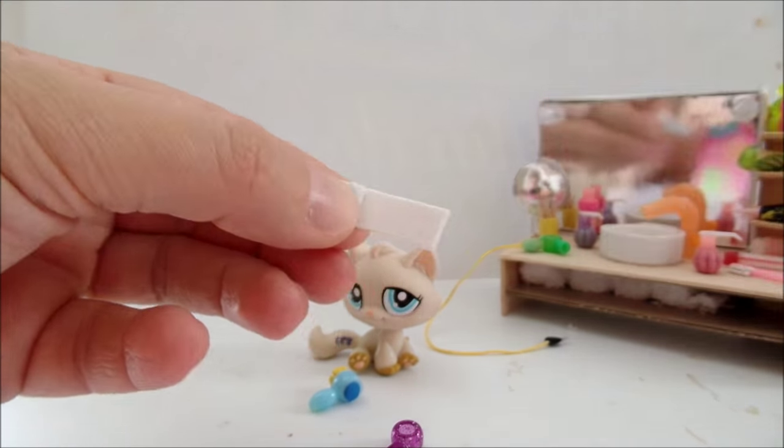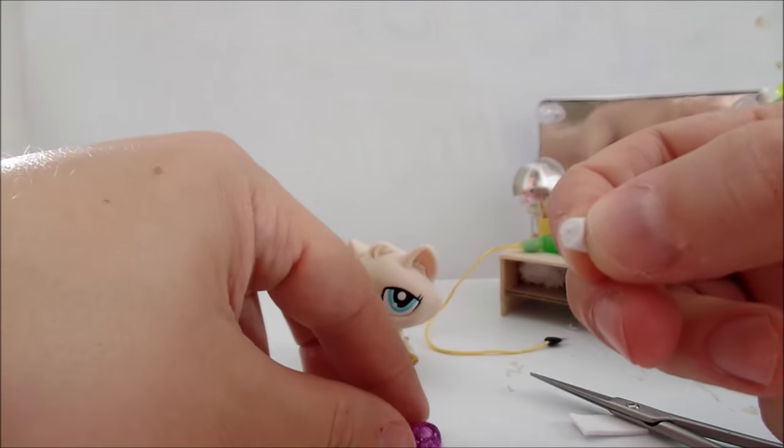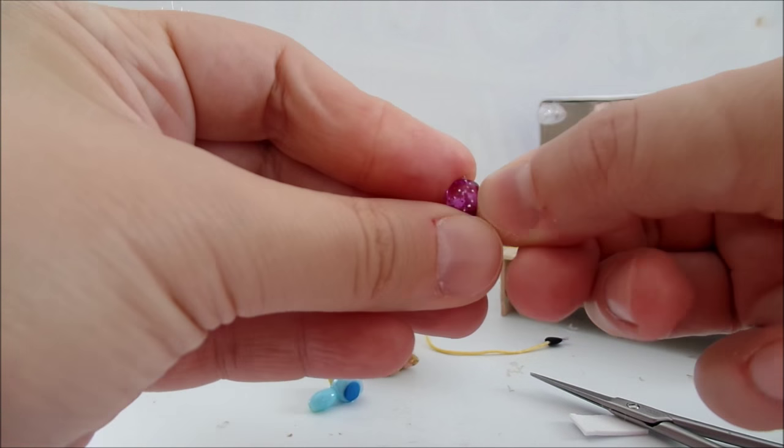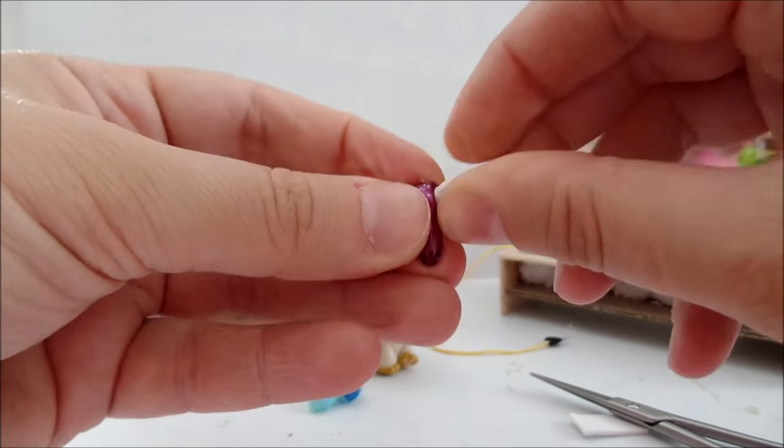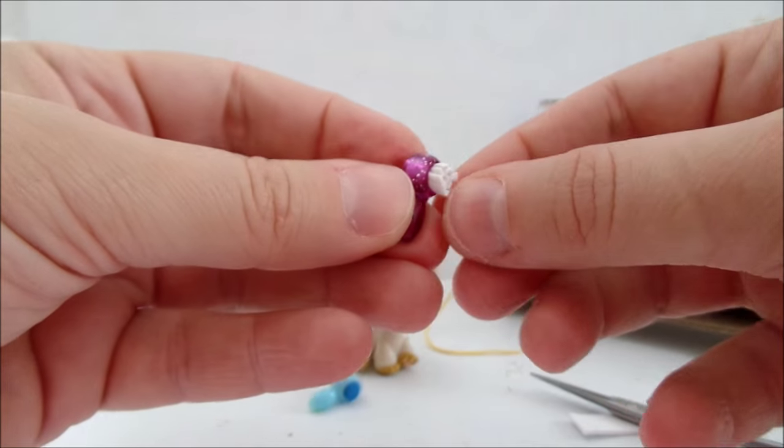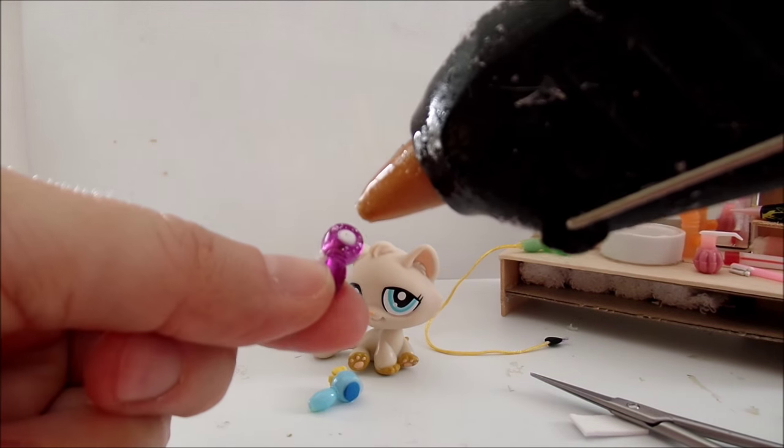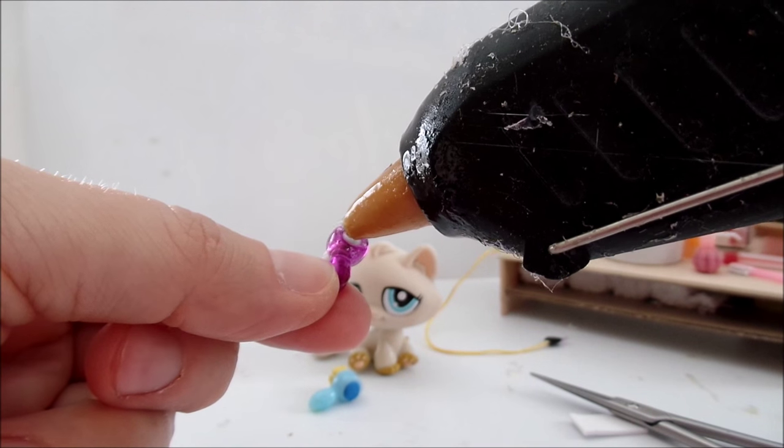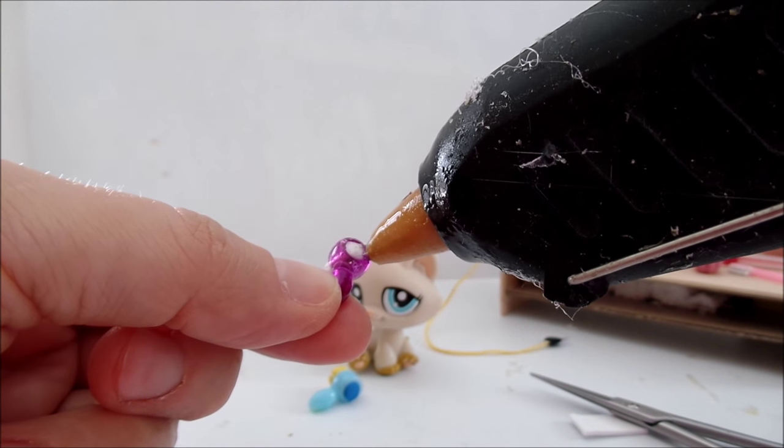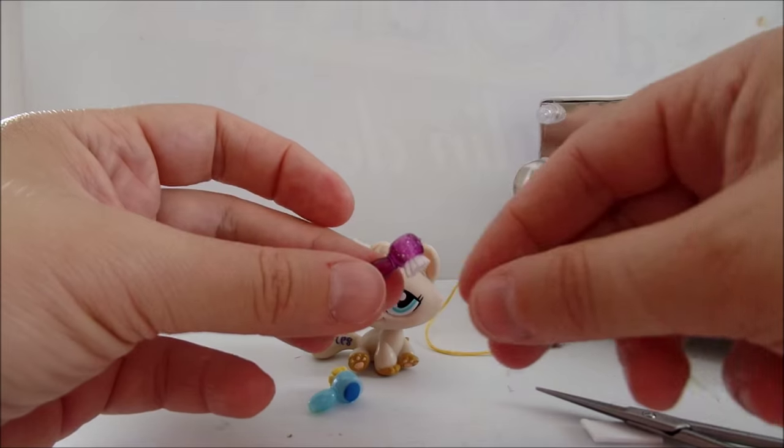Trim off the excess. And insert it into the bead. You can seal it with hot glue on the other side. And you're done.